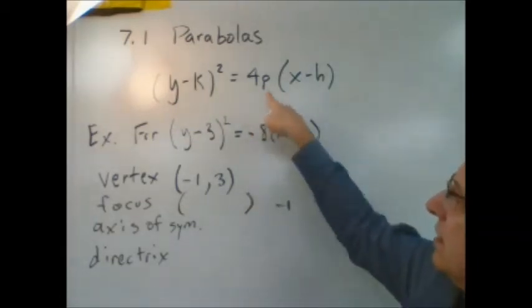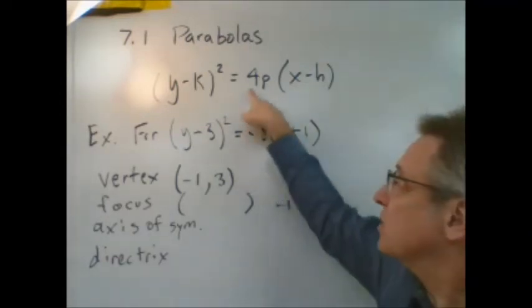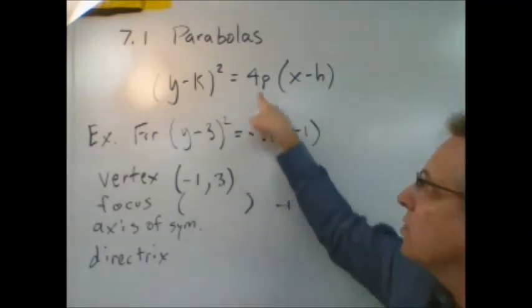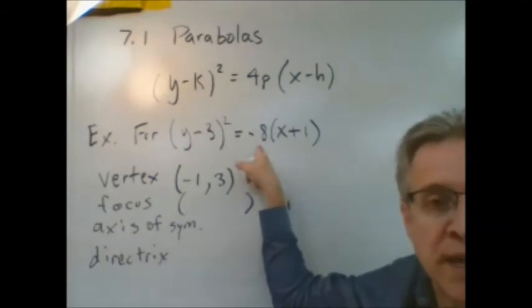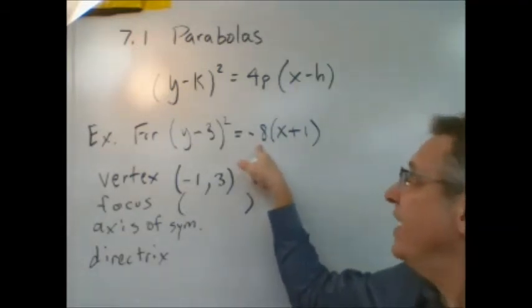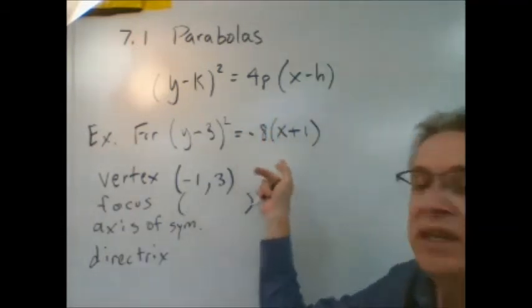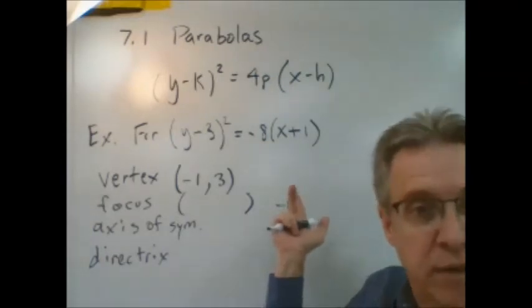Well, you can see that the negative 8 here is in the position where the 4p is. So that must mean that 4p equals negative 8. And if that's true, then p equals what? Negative 2, right?